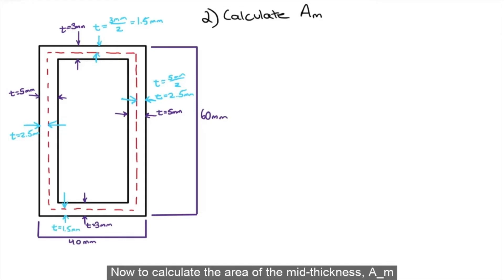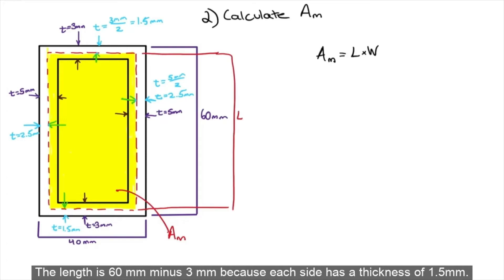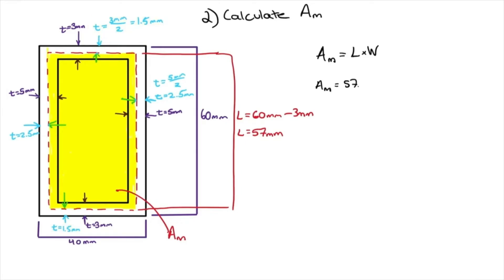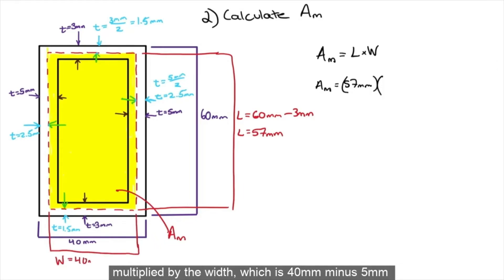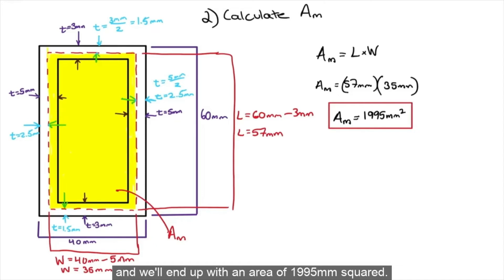Now, to calculate the area of the mid thickness, AM, it is simply length times width of this area. The length is 60 millimeters minus 3 millimeters because each side has a thickness of 1.5 millimeters, multiplied by the width, which is 40 millimeters minus 5 millimeters, and will end up with an area of 1,995 millimeters squared.